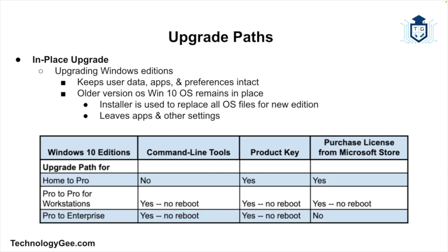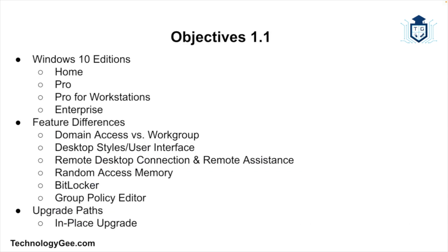In-place upgrades involve upgrading Windows editions while keeping user data, applications, and preferences intact. The older version of Windows 10 remains in place and its installer is used to replace all the operating system files for the new edition, leaving applications and other settings intact.